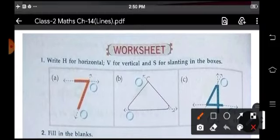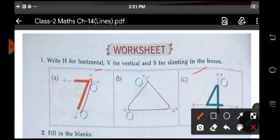Now here is a worksheet children. So this worksheet you will do yourself. Write H for horizontal, V for vertical and S for slanting in the boxes. So this is slanting. This one is slanting. This is horizontal.